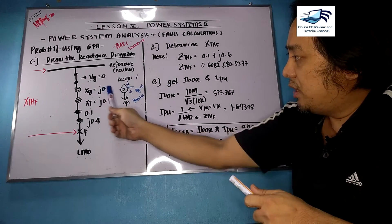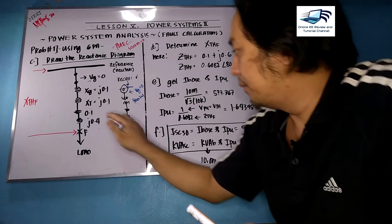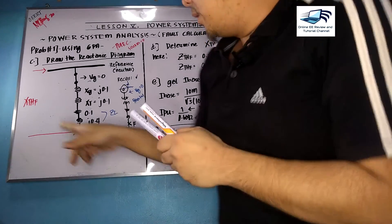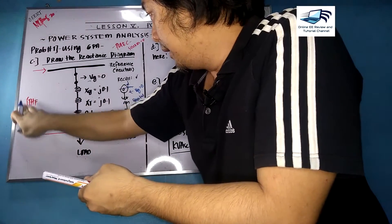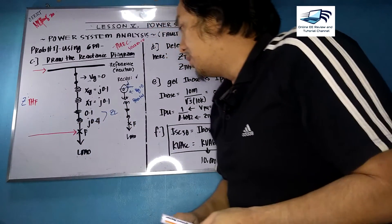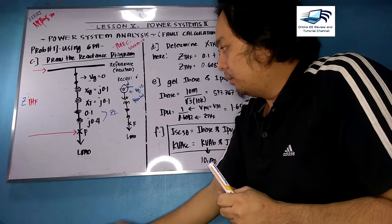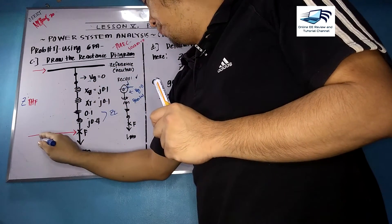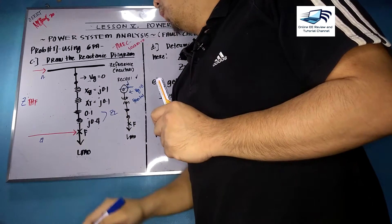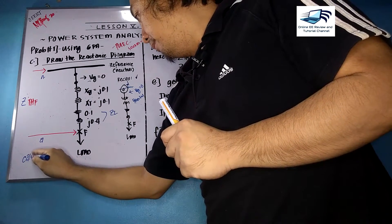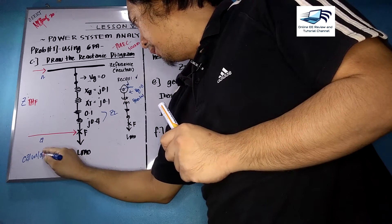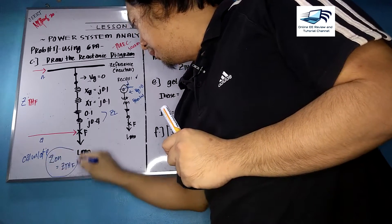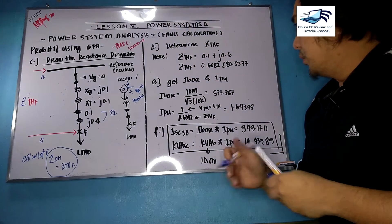Using per-unit values, we have XG = j0.1, XT = j0.1, and the transmission line impedance of 0.1 + j0.4. The fault point occurs at the load end. Since there is a resistive component of 0.1 from the transmission line, this is actually an impedance diagram. The reference is the neutral node. We label the fault point as A and the neutral as N, so we need to calculate ZAN, which equals the Thevenin impedance up to the fault point.